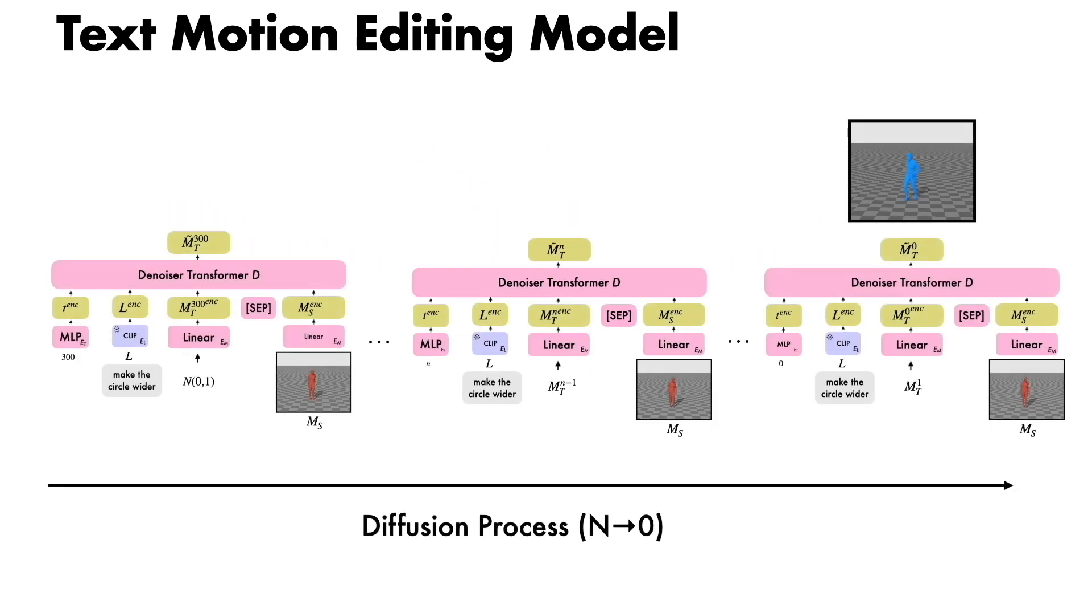At inference time, the model starts from Gaussian noise and the two conditions to generate the edited animation.